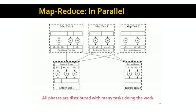Once a reduce task has received input from all the map tasks and all the map tasks have completed, then you can start the reduce tasks. The reduce task's first job is to sort its input and group it together by key. So in this case, there are three values associated with key K4 — they're all grouped together. And once that is done, the reduce task invokes the reduce function provided by the programmer on each such group and creates the final output.